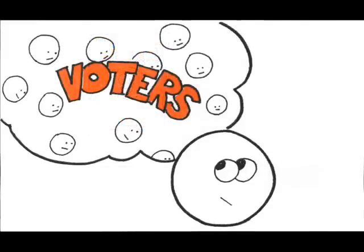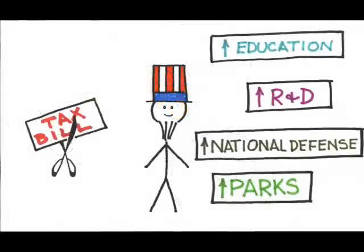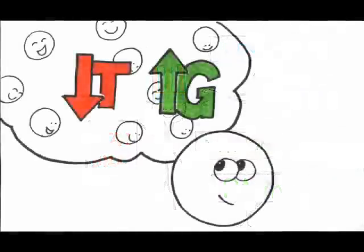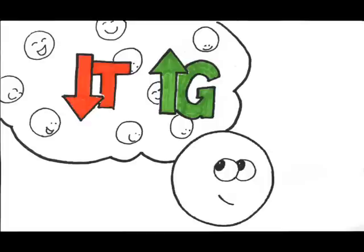After all, what will the voters like better? Tax cuts and more spending on their favorite programs, that is, expansionary policy, or higher taxes and cuts to their favorite programs, contractionary policy? Well, as a politician, I would prefer expansionary policy because voters prefer expansionary policy.